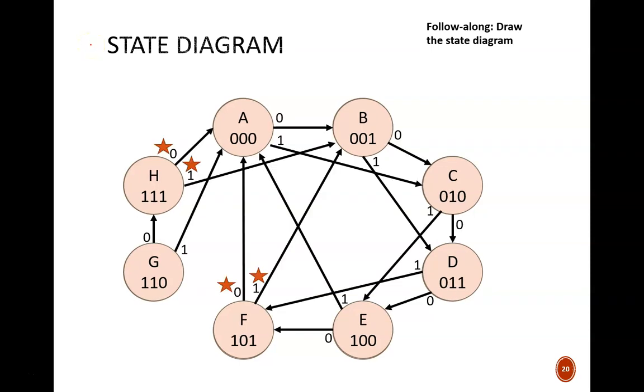Here is my state diagram. The table tells us that when at state A with an input of 0, the circuit moves on to state B. Also, when at state A with an input of 1, the circuit moves on to state C. And so on for all remaining nodes.